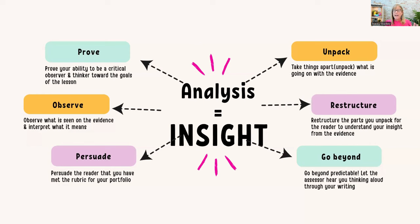So let's break down analysis. Honestly, if I can help you understand it in any one word, I think that word is insight. The assessor just wants insight into your brain. And there are six ways of doing this. Number one: prove. You're proving your ability to be a critical observer and critical thinker toward the goals of the lesson.